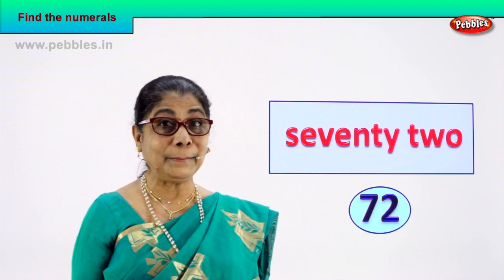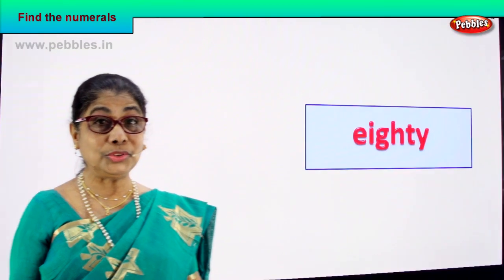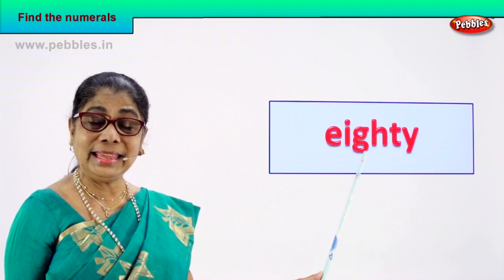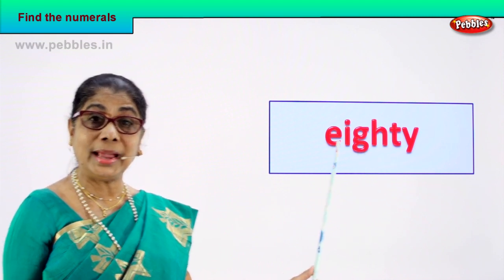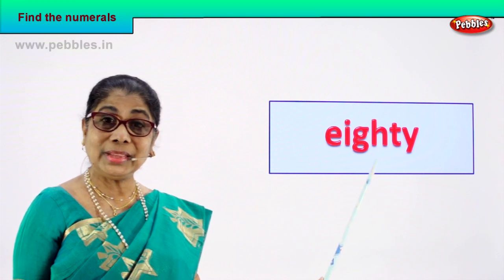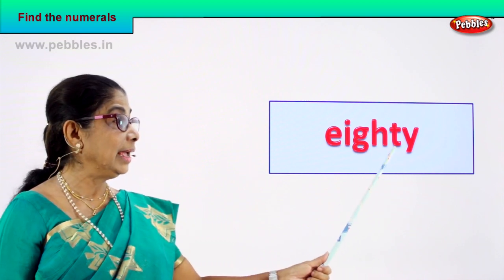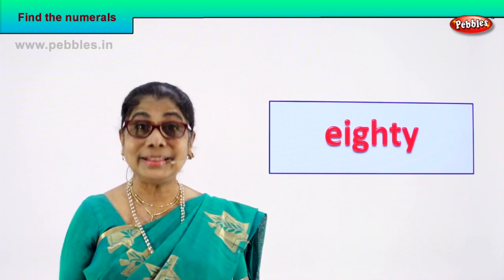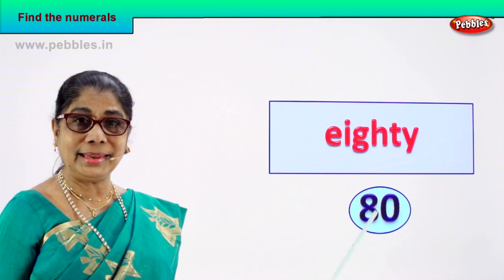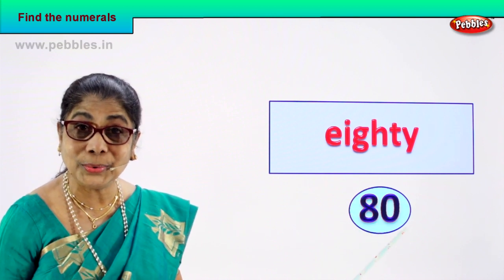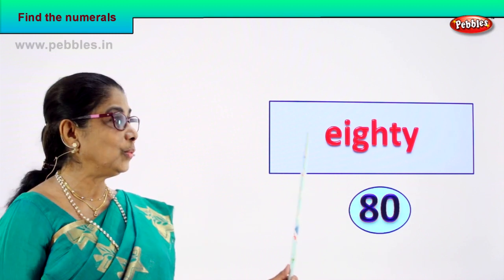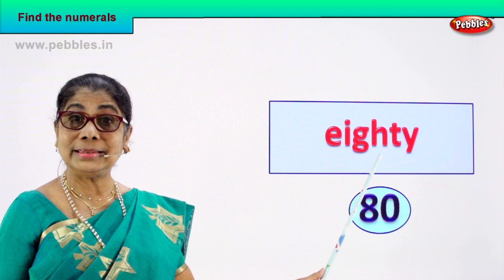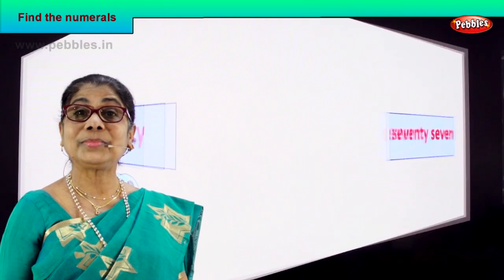Shall we take another number name? I hope you are enjoying it. Look, read aloud. E-I-G-H-T-Y, 80. How do we write the numeral? Eight and zero — 80. Very good! So we learn to write the numeral for the number name. Shall we take another number name?